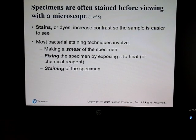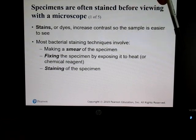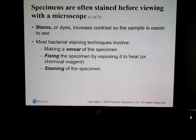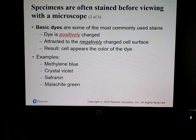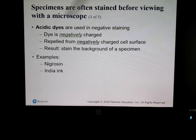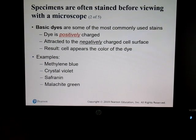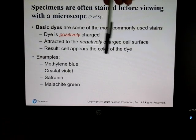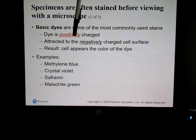We'll be doing a lot of staining exercises in the lab. First you smear the specimen onto a slide, fix it by exposing it to heat, then stain it. We have basic dyes, which are positively charged, and acidic dyes, which are negatively charged. We use basic dyes primarily in simple staining because bacteria have a negative charge, so the positive basic dye is attracted to and sticks to the negatively charged bacteria.